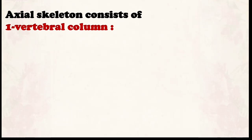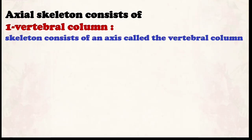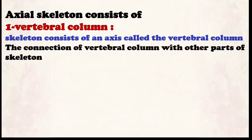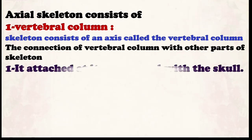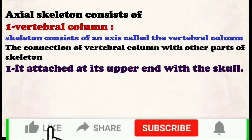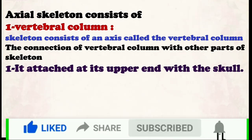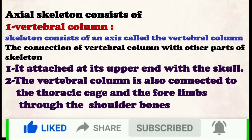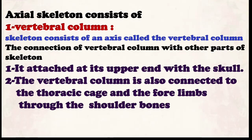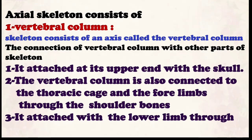We will start with the structure of the axial skeleton. Number one: the vertebral column, also called the backbone. The vertebral column is connected with other parts of the skeleton — it is connected with the upper limbs, the lower limbs, and the skull. The backbone is connected with the skull at its upper end, with the thoracic vertebrae, and with the four limbs through the shoulder bones. It attaches with the lower limbs through the pelvis.